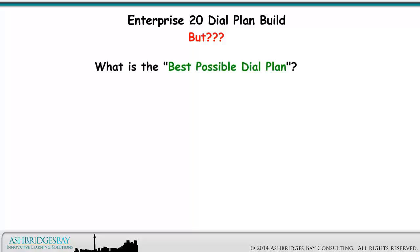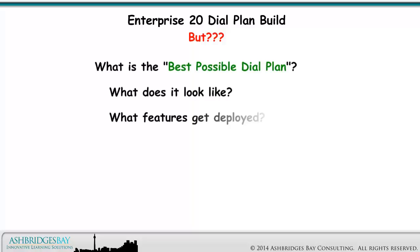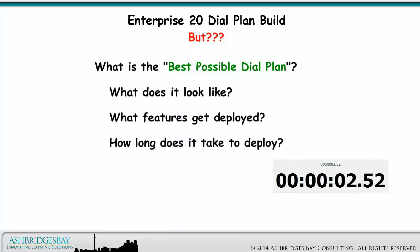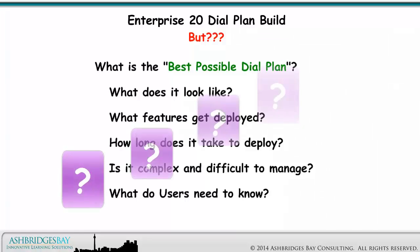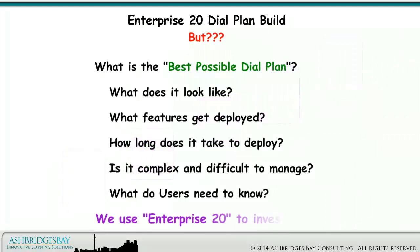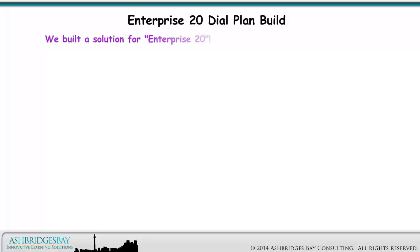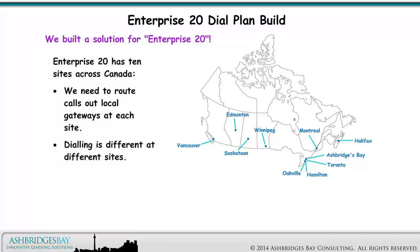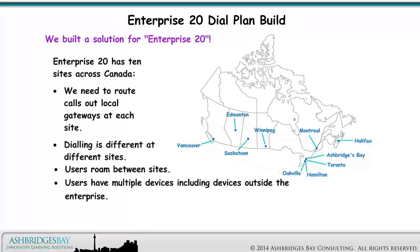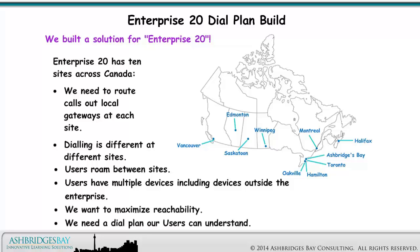What is the best possible dial plan? What does it look like? What features get deployed? How long does it take to deploy? Is it complex and difficult to manage? What do users need to know? We use Enterprise 20 to investigate. Enterprise 20 has 10 sites across Canada. We need to route calls out local gateways at each site. Dialing is different at different sites. Users roam between sites and have multiple devices, including devices outside the enterprise. We want to maximize reachability and need a dial plan our users can understand.